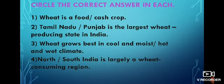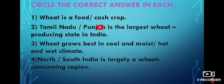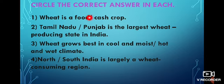Before moving on into the lesson, we are going to do one exercise. Circle the correct answer in each. You all know about wheat now. In this lesson, we are going to read about the wheat producing region. Number 1: Wheat is a food or cash crop? It's a food crop.